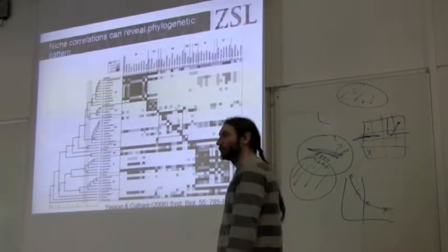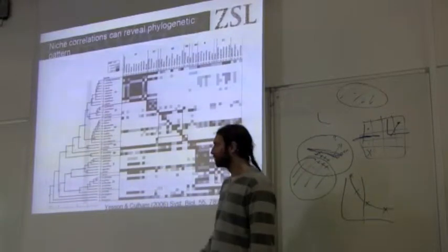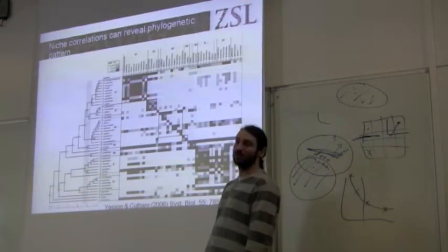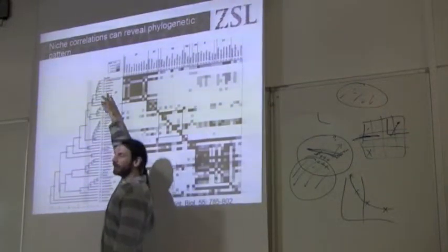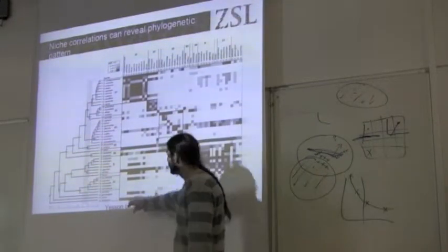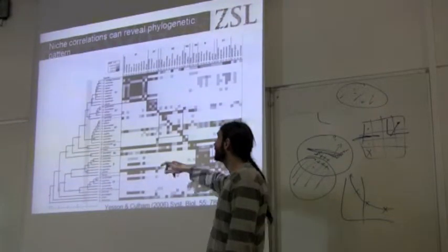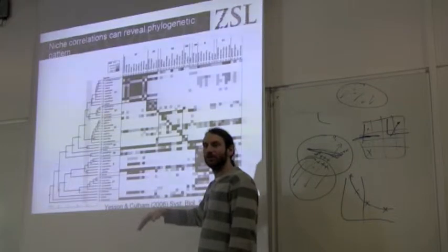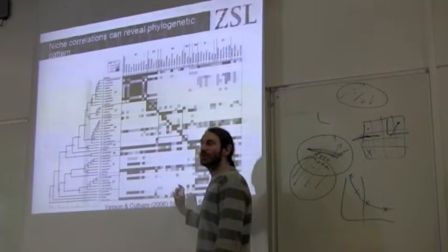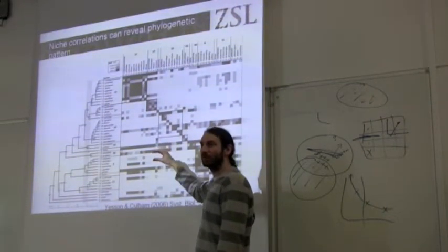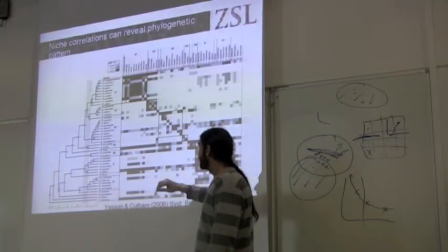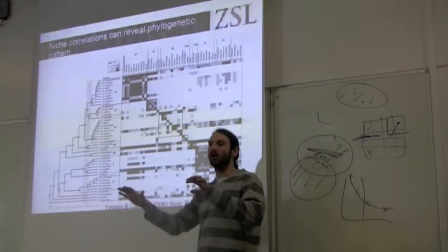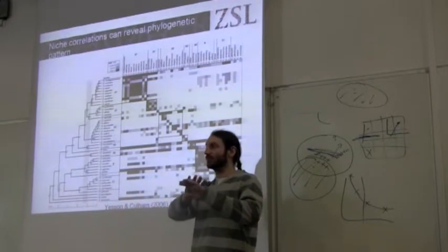But if we can measure niche correlation and have some reasonable trust in what it's telling us, we can do some useful and interesting things with it. Here's a phylogeny of tonic response, and here's a matrix that shows niche similarity. The dark squares show high levels of similarity and the white squares show low levels of similarity. The metric used here is not the D or the I statistic, but a different measure of similarity.